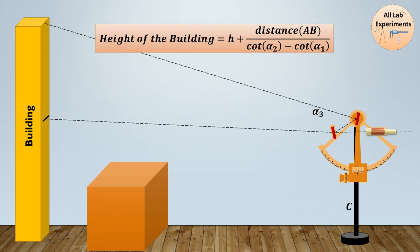Now use this formula: the height of the building is h plus distance between A-B times cot alpha 2 minus cot alpha 1, just because this small h is the height of the sextant and the rest part is the height of the building.